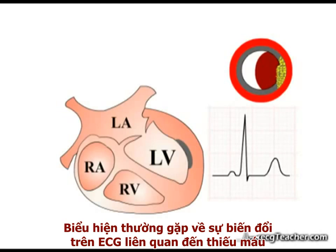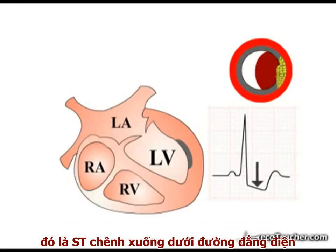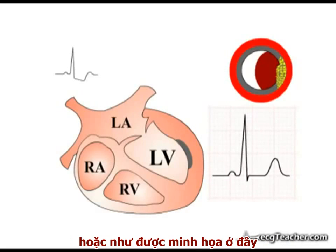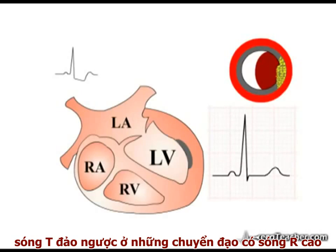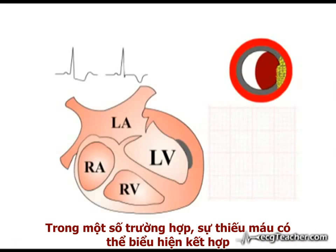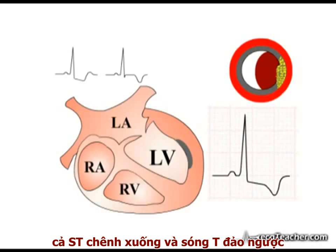However, the classical ECG abnormalities associated with ischemia are depression of the ST segment below the isoelectric line — this is the most common finding — or, as illustrated here, inversion of T waves in leads with dominant R waves, known as loss of concordance. On occasion, ischemia manifests as a combination of both ST segment depression and T wave inversion.